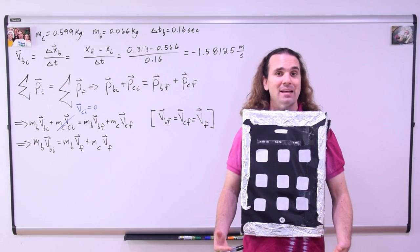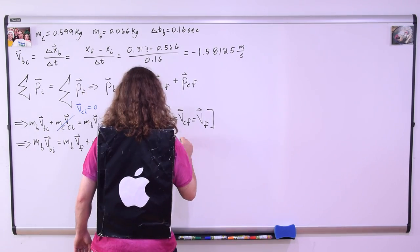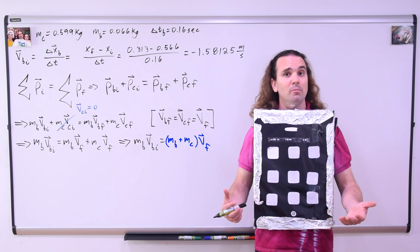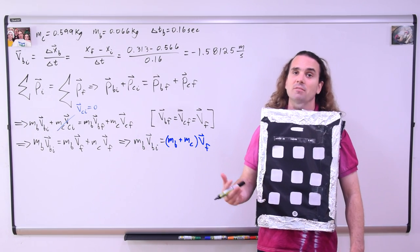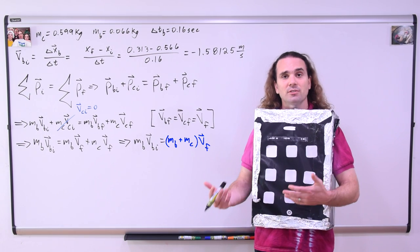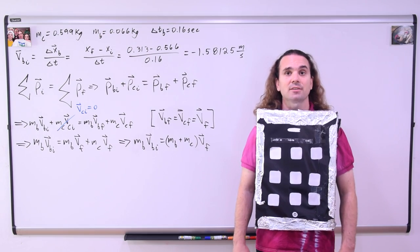Therefore, we can combine the masses to get the mass of the ball times the velocity of the ball initial equals the total mass, or the mass of the ball plus the mass of the cart, all times the final velocity of the ball cart system. And we can solve for that final velocity.